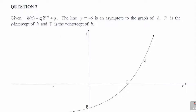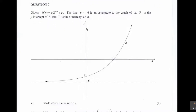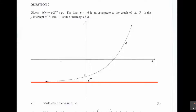It says question 7: given h of x is equal to a times 2 to the exponent x minus 1 plus q, the line y equals minus 6 is an asymptote to the graph of h. P is the y-intercept of h, and T is the x-intercept of h. You can see the y-intercept here — the y-intercept is negative 6. There is a point T as the x-intercept, so we have P as the y-intercept and T as the x-intercept.